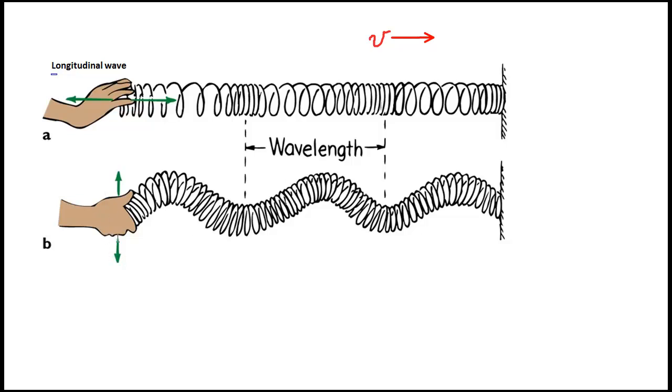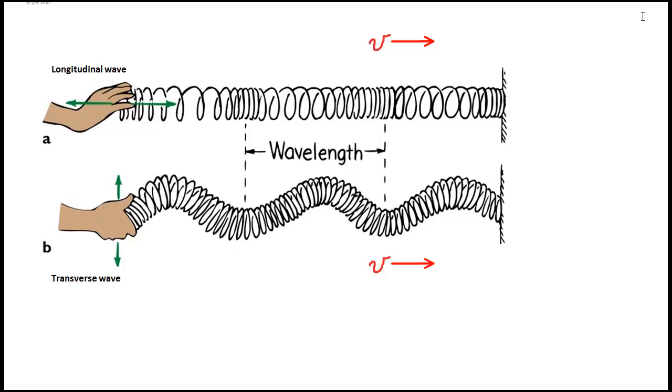Now, if we look at the bottom wave, I'm disturbing it up and down, but we know that these pulses from experience will also travel left to right. So if the disturbance is perpendicular to the direction of motion, we say that is a transverse wave. Let's label that one. All right, so we've labeled our longitudinal wave on the top and our transverse wave on the bottom.